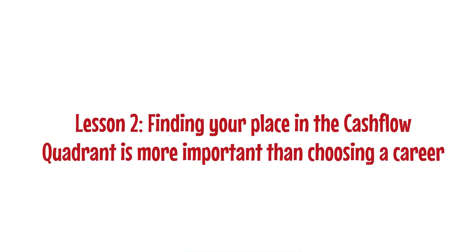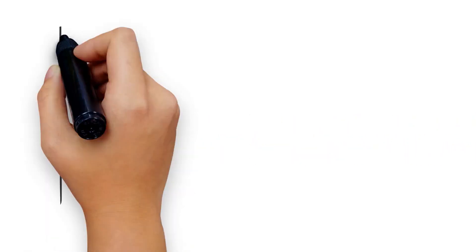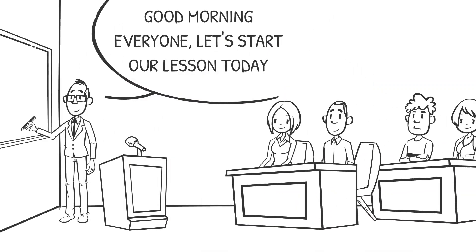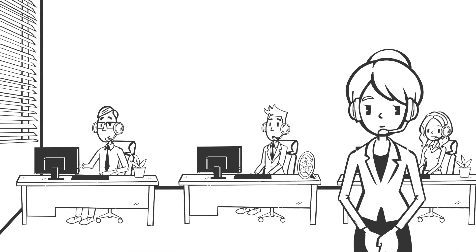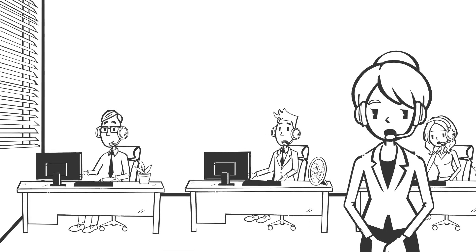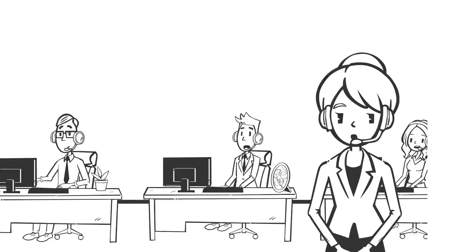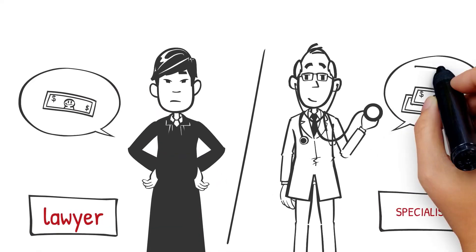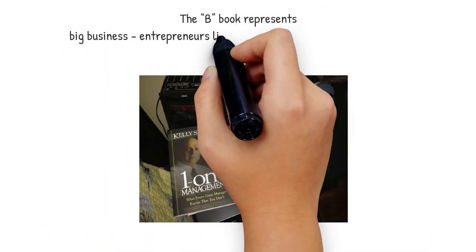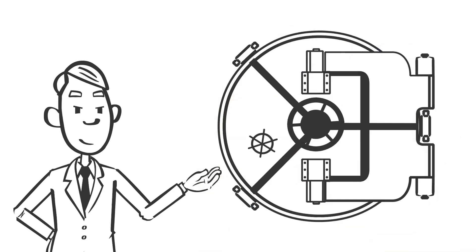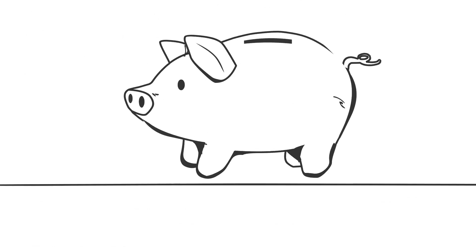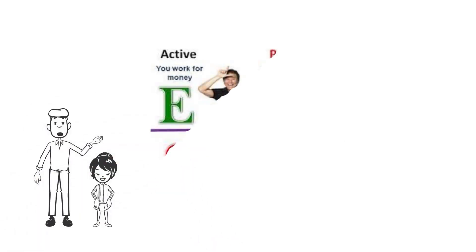Lesson two: finding your place in the cash flow quadrant is more important than choosing a career. In school you don't learn how to find the right quadrant, however it may be one of your most important decisions. Each quadrant is identified by a letter: E represents the employee — that's where most people are. S represents small business or self-employment; people who work for commission or pay, such as doctors and lawyers. B represents big business entrepreneurs like Steve Jobs who build companies that employ hundreds of people. Finally, I stands for investors and financial analysts like Warren Buffett. The I quadrant does not include idle investors investing in pensions and 401(k)s. Schools prepare children for the S or E quadrant of life.